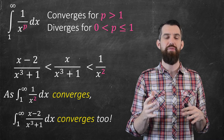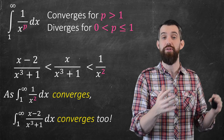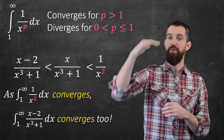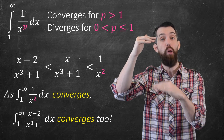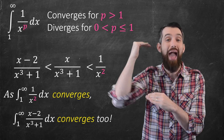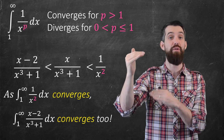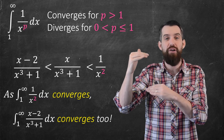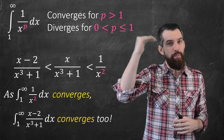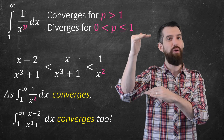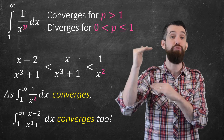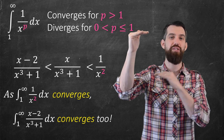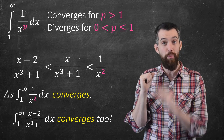The final thing I want to talk about is that this theorem only works one direction — the other direction doesn't apply. If you have the bigger function and you know that the smaller function converges, it doesn't tell you anything about the bigger function, whether it converges or diverges. Likewise, if the bigger one diverges, the smaller one may diverge or it may converge — you don't know. So the comparison test only tells us: when the big one converges, the small one converges; and when the small one diverges, the big one diverges as well.